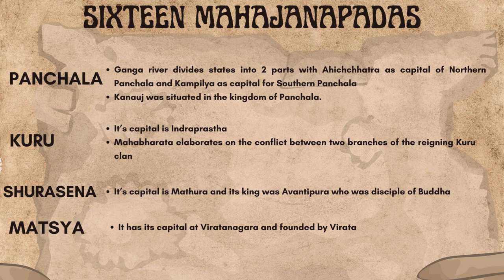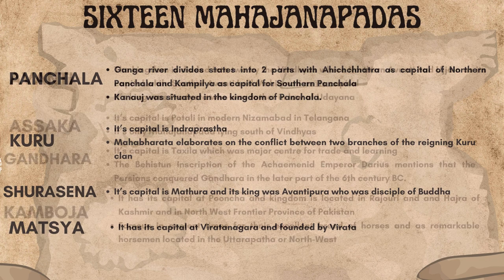The Kingdom of Kuru had its capital at Indraprastha. The Mahabharata elaborates on the conflict between two branches of the reigning Kuru clan. Shursena had its capital at Mathura, and its king Avantipura was a disciple of Buddha.